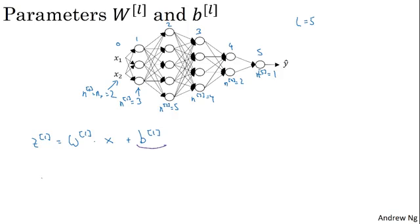So now let's think about the dimensions of z, w, and x. z is the vector of activations for this first hidden layer. So z is going to be 3 by 1. It's going to be a three-dimensional vector. So I'm going to write it as an n1 by 1 dimensional vector, or n1 by 1 dimensional matrix. It's 3 by 1 in this case.